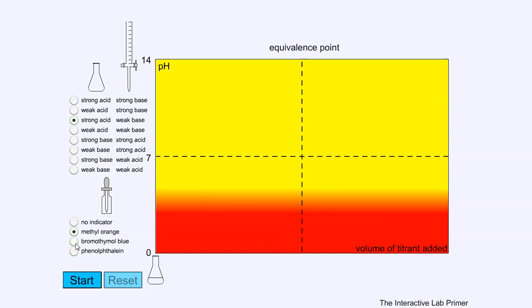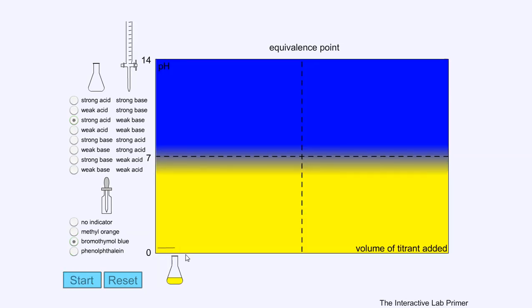Let's now try with bromothymol blue. Again you'll see it's yellow because we're starting off with a strong acid. It's a gentle slope before there's a sudden change and it's turned to blue. The color change, the end point, is still on the steep part of the curve so it could be used but not ideal because the equivalence point is somewhere over here.